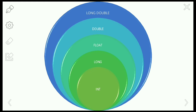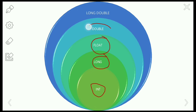Before moving to explicit type conversion, we can look at a chart showing the hierarchy of data types. Integer has a lower range than long, float has a higher range than long, double is higher than float, and long double is the highest. So character is lower than integer, and long double is the highest data type in this hierarchy.